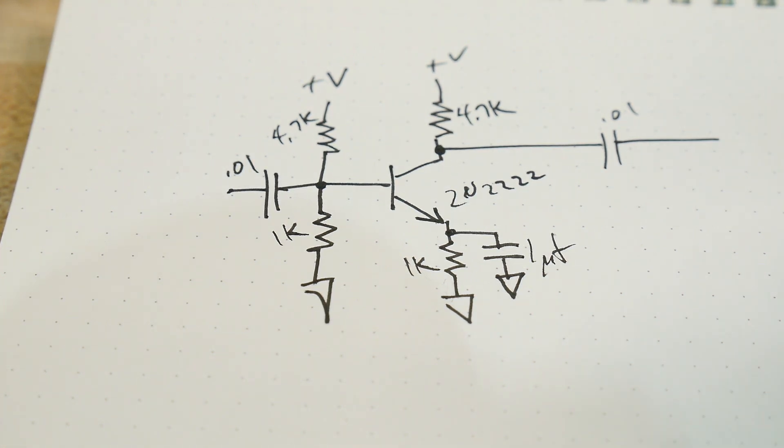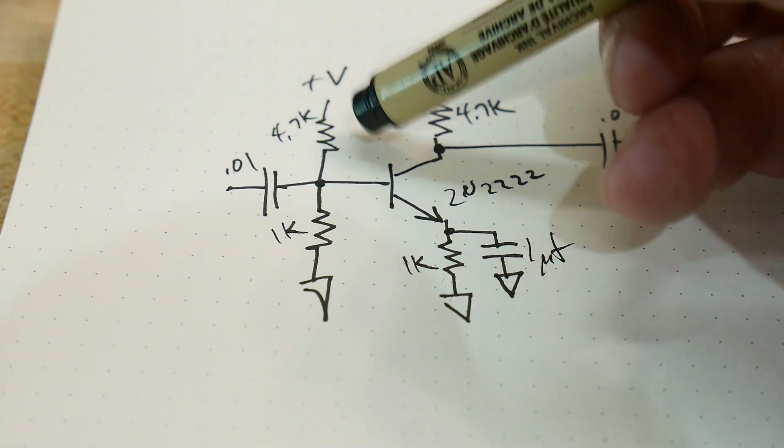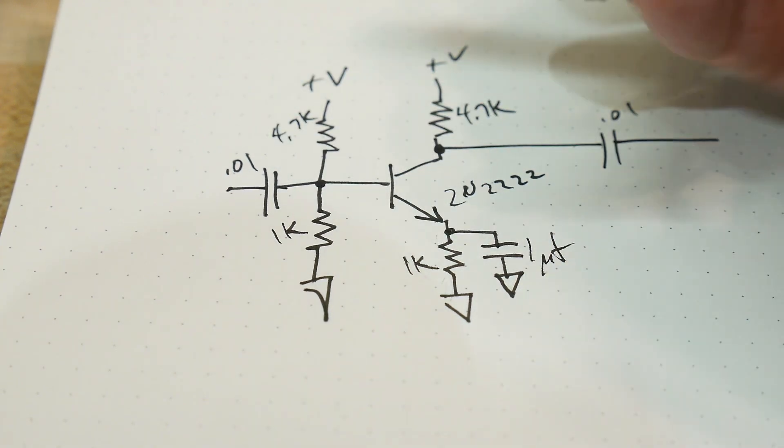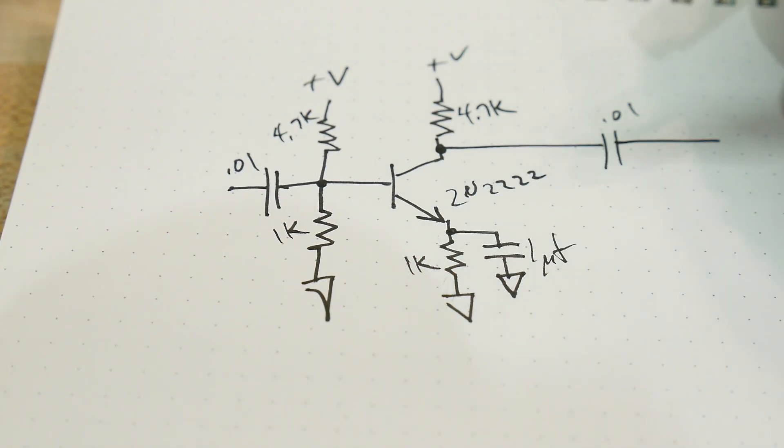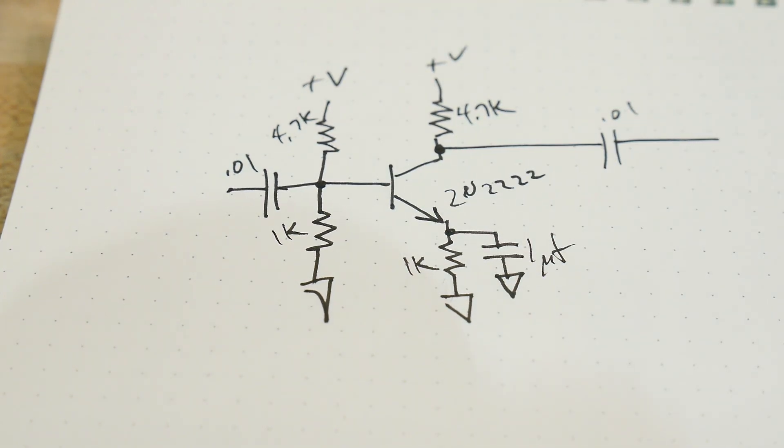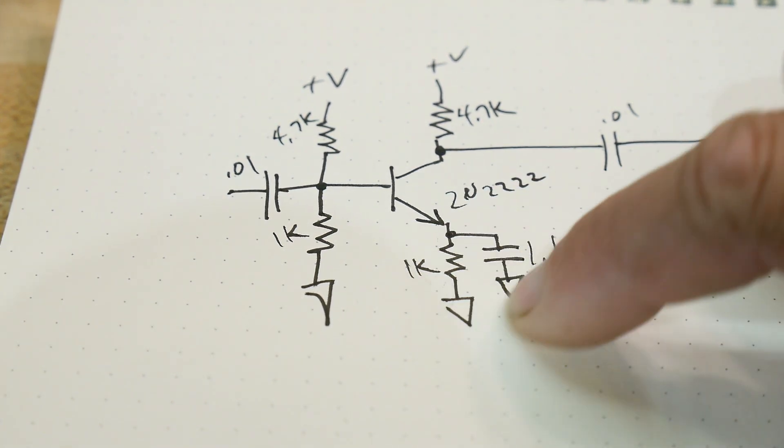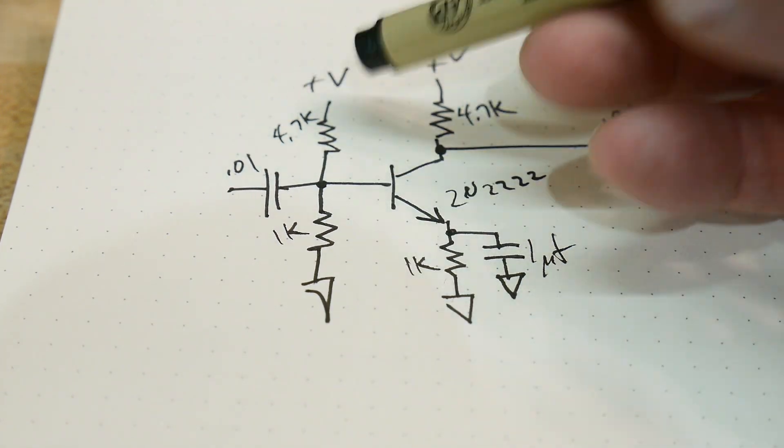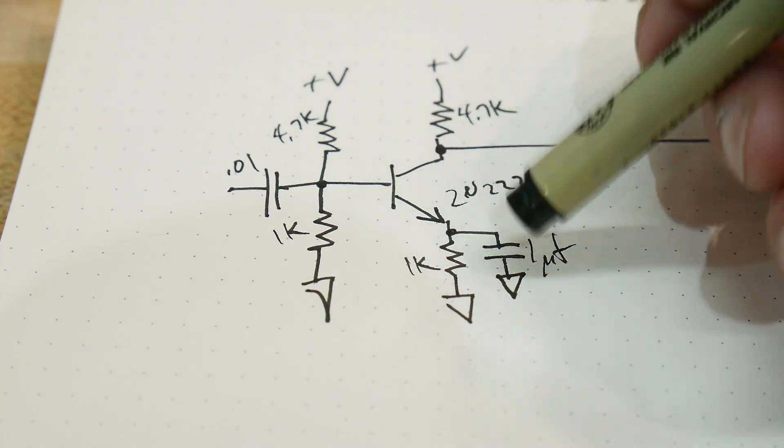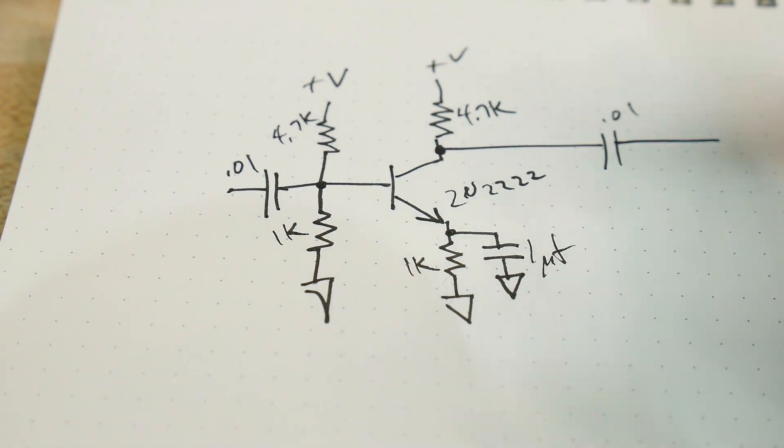And just in case anybody was wondering, here are the values that I used. 4.7k, 1k, 4.7k, 1k, 1 microfarad, and then some 0.01s. So the big takeaway, again, is why is this down here? The 1k helps the stability of it, and the 1 microfarad increases the gain.